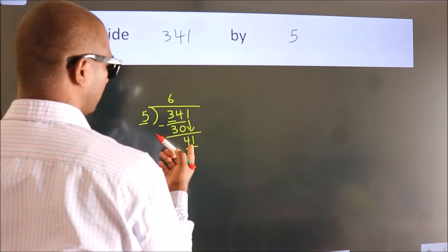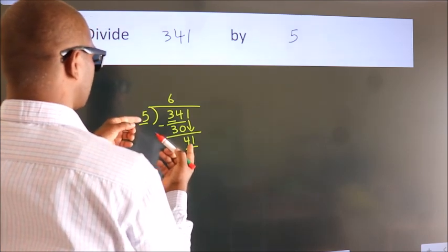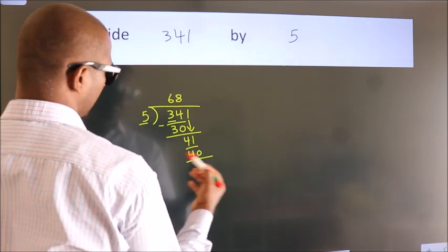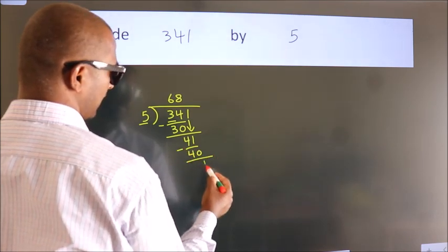A number close to 41 in the 5 table is 5 times 8, which is 40. Now we subtract, we get 1.